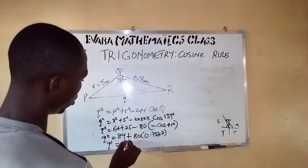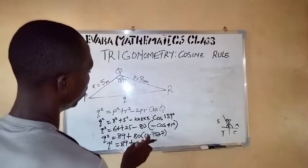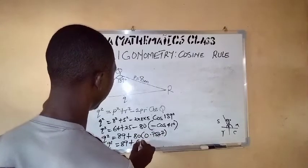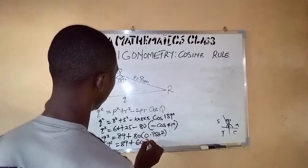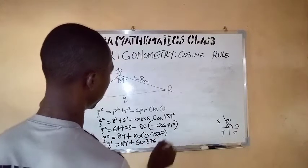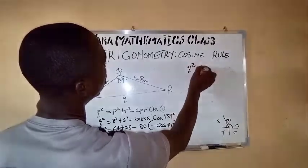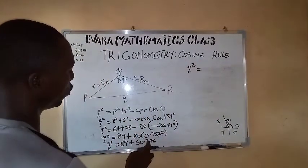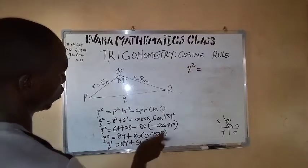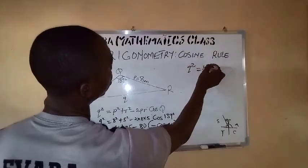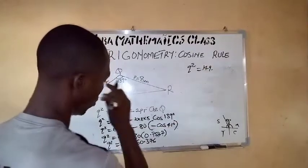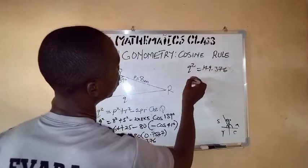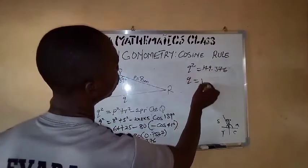80 times the cosine of 41 degrees. From our calculator, that is 0.7547. So we have q² = 89 plus, if you multiply 80 by 0.7547 you have 60.376. So our q²